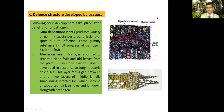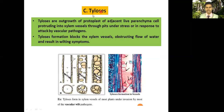Abscission layer formation: the infected portion of the leaf is separated from the healthy portion — the palisade and spongy mesophyll cells. Normally an abscission layer forms during old or ripened fruit or old leaves, but as a defense mechanism the plant has the ability to develop the abscission layer in leaves and fruit as well.